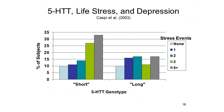Subjects with the long form of the 5-HTT genotype, that is, two long alleles, showed a relatively low incidence of depression regardless of their history of stress. However, subjects with the short form of the genotype, with at least one short allele — SS, SL, or LS — combined with a history of many stressful events during the previous five years, showed a much higher incidence of depression. Again, the 5-HTT genotype did not cause depression, nor did exposure to lots of stress. It was the combination that precipitated the episode of depression — the combination of genetic diathesis and environmental stress.